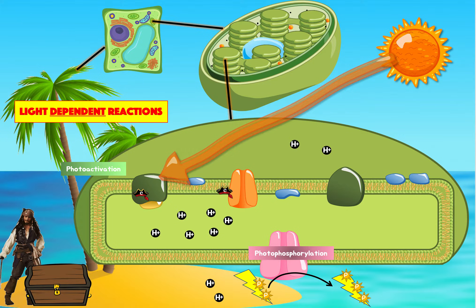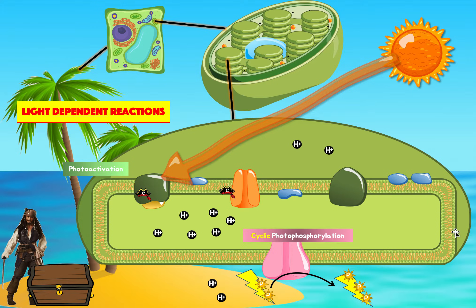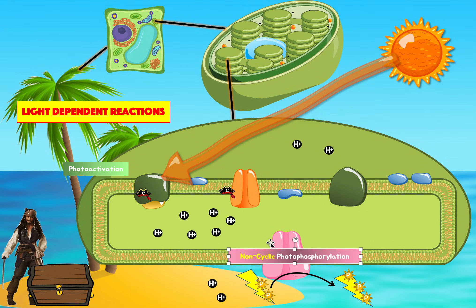Now we want to know the difference between cyclic and non-cyclic photophosphorylation. The process I just described is called non-cyclic photophosphorylation, because it happened in one straight line. The electron was excited, it traveled, it activated the proton pump, and ATP was made. It didn't happen in a loop — it was just one sequence of events. This sequence can continue happening again and again, but always in one straight line, so that's why it's called non-cyclic.